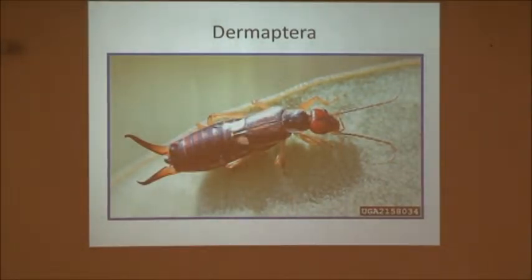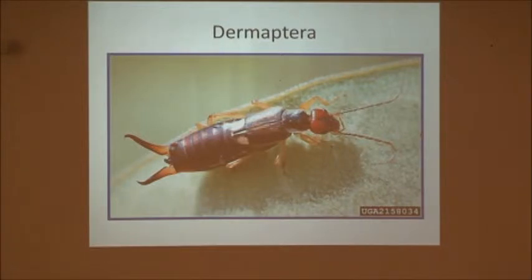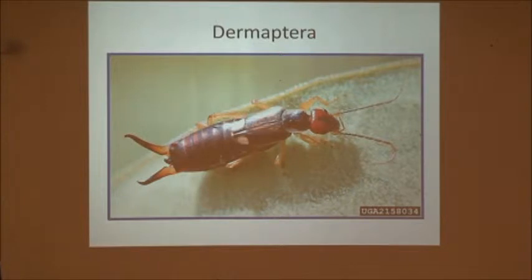Dermoptera — this is where your earwigs come in. They're kind of gross-looking little bugs, but these are all different types of earwigs. Some of those are damaging, some of them are not. They like to eat and feed on decaying wood, so a lot of times if you peel the bark back on a fallen log you'll see a little earwig in there.